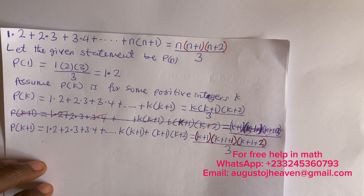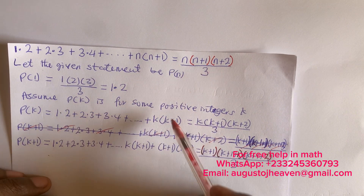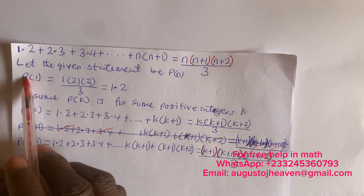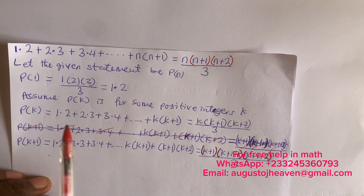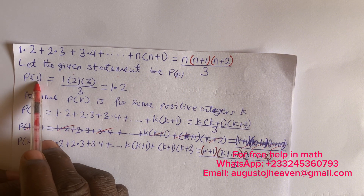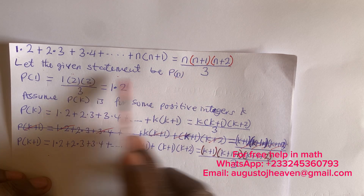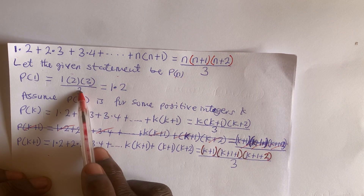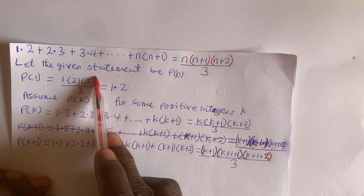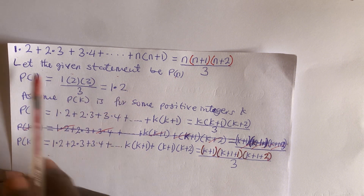We let this given statement be P(n). Putting n=1 gives us 1×(1+1) = 1×2, and on the right side: 1×2×3 divided by 3 equals 2. Since both sides equal 2, P(1) is true.